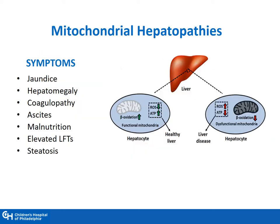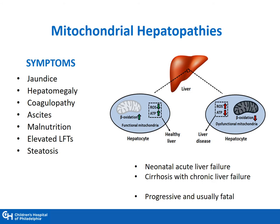When we think about mitochondrial hepatopathy, symptoms include jaundice, hepatomegaly, splenomegaly at times, coagulopathy, ascites, various degrees of malnutrition, elevated LFTs, and steatosis. Patients usually present in infancy with some degree of neonatal acute liver failure, or sometimes later in life with cirrhosis or chronic liver failure. Unfortunately, most mitochondrial hepatopathies are progressive and can be fatal.